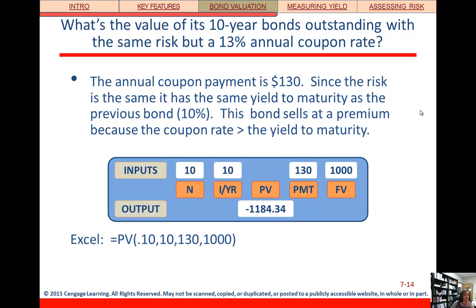Now let's change our coupon rate. Our coupon rate is 13% but the yield is still 10%. Remember that at the time this bond was issued the yield and the coupon rate should have been equal, so the yield used to be 13% and now interest rates have dropped to 10%. A key feature of bonds is that interest rates and bond prices move in opposite directions — if the interest rate goes down, the bond price goes up, meaning it's selling at a premium, which is higher than face value. So we change the payment to $130, that's the face value of 1,000 times 13%, compute present value and we get negative $1,184.34.